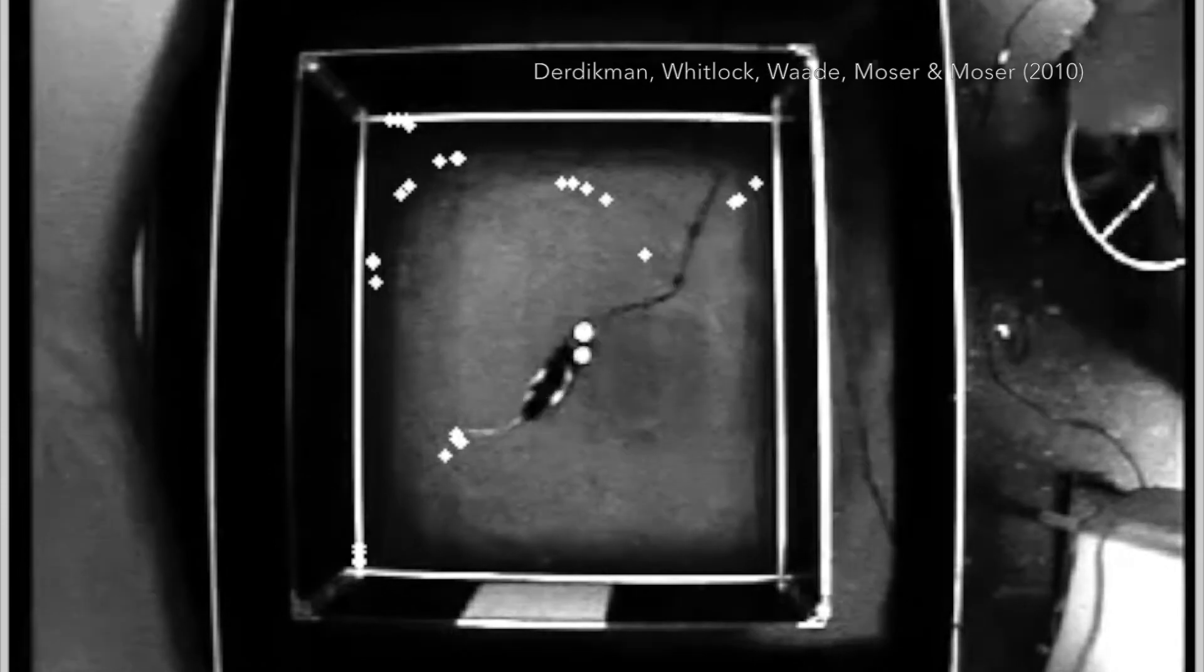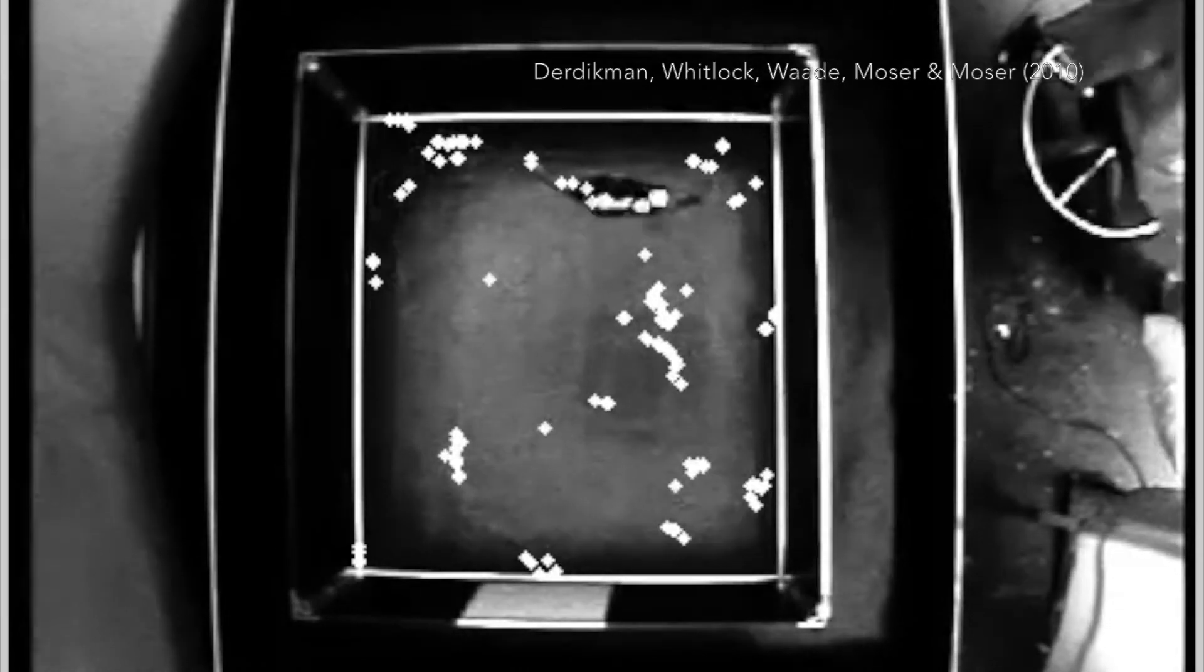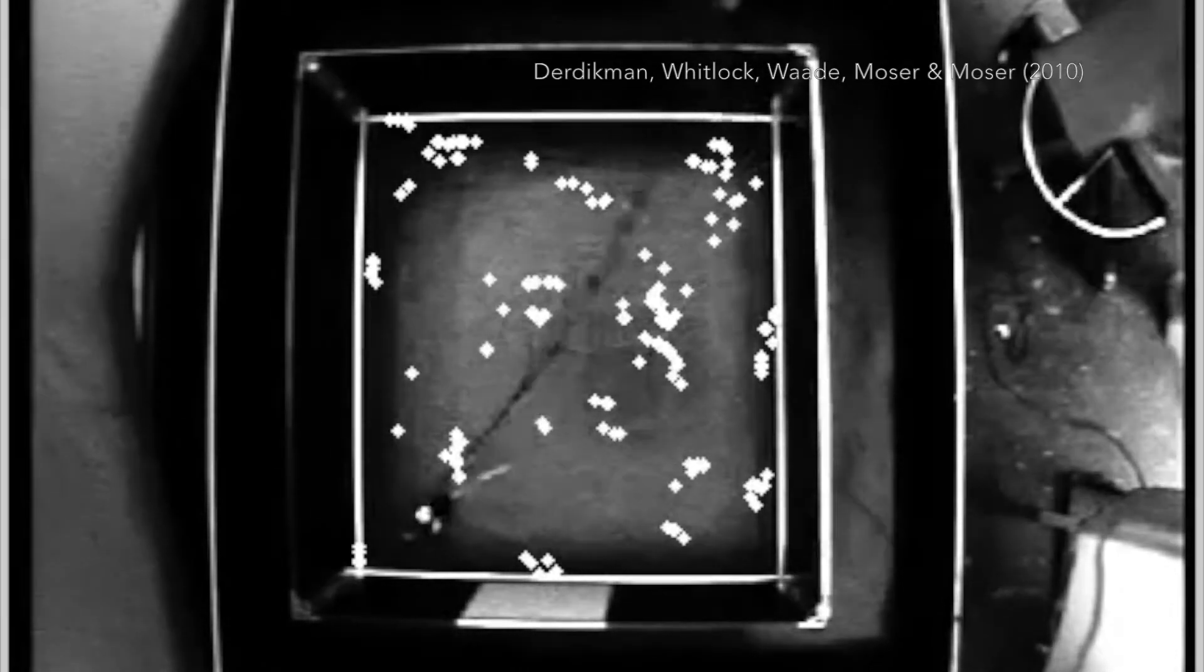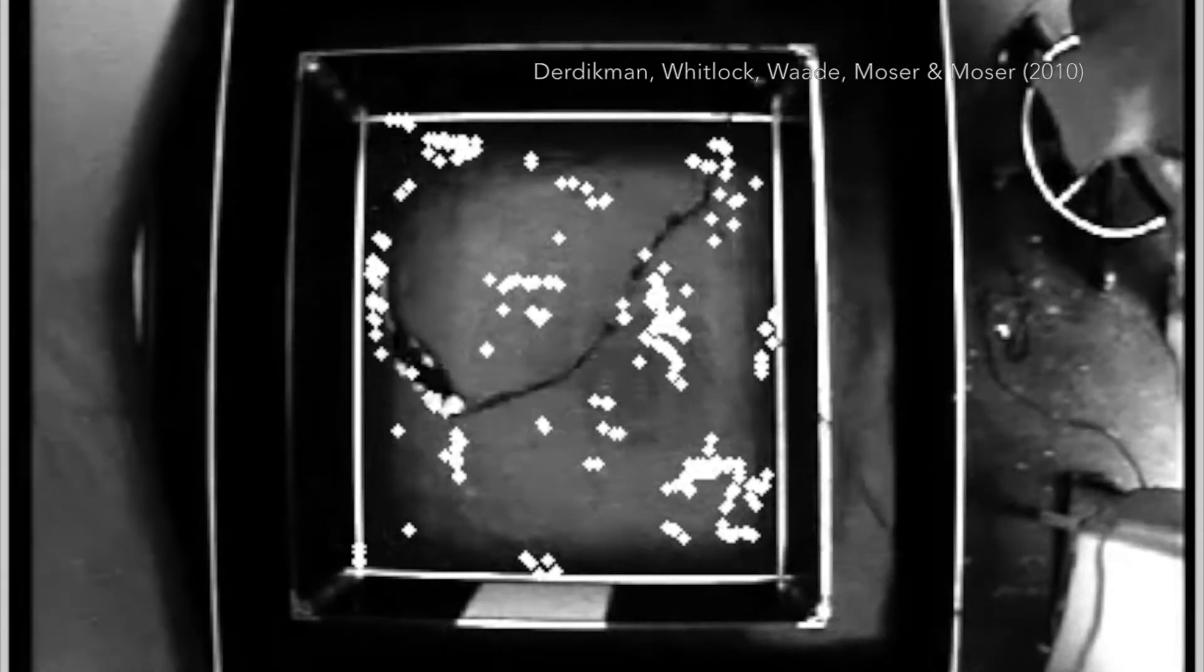This shows the activity of a single grid cell. You can see how, as the animal walks through the room, the grid cell firing forms a strong pattern.